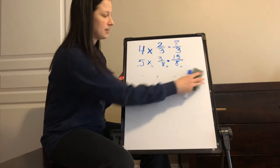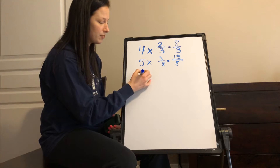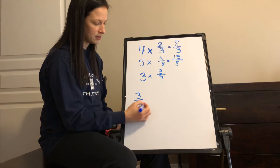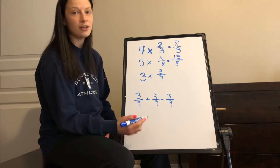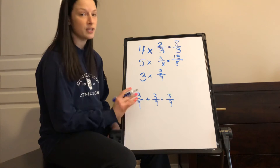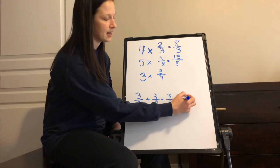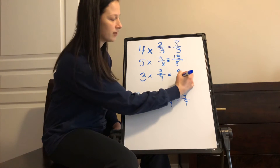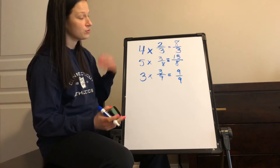The last example to remind students how to multiply a whole number times a fraction: three times three-ninths, which is the same as three-ninths plus three-ninths plus three-ninths. Super important reminder — your denominator is not changing when we're adding the same size pieces. So three-ninths plus three-ninths is six-ninths, plus three-ninths is nine-ninths.